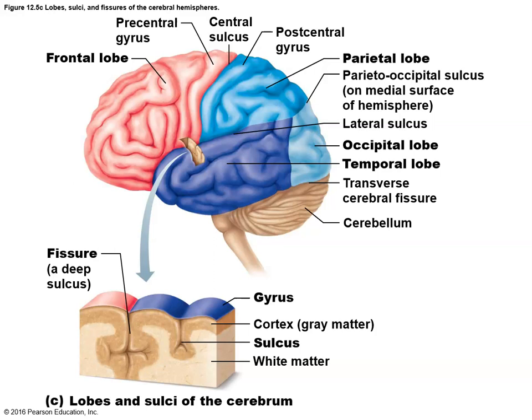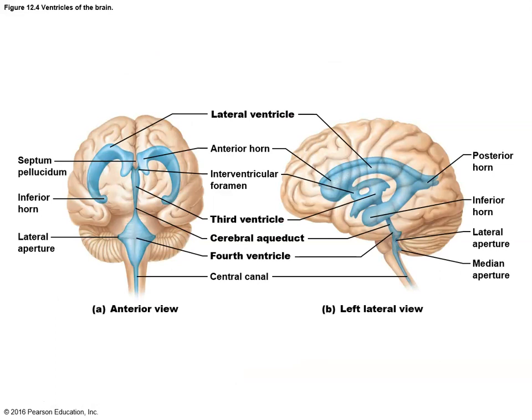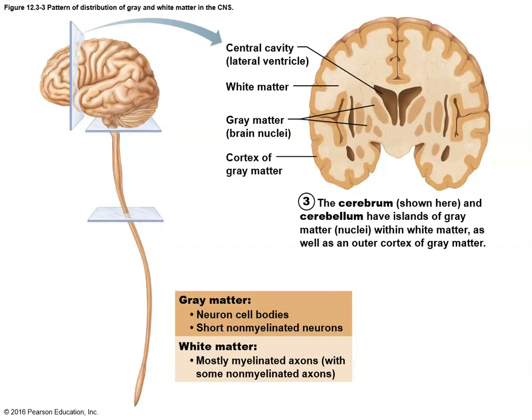Gray matter comprises about 40 percent of total brain mass. Although it's primarily on the outside surface and only about an eighth of an inch thick at any location, the extensive fissures and sulci dive deeply into the core of the brain, so that the highly convoluted outer surface adds up to nearly half of total brain mass.